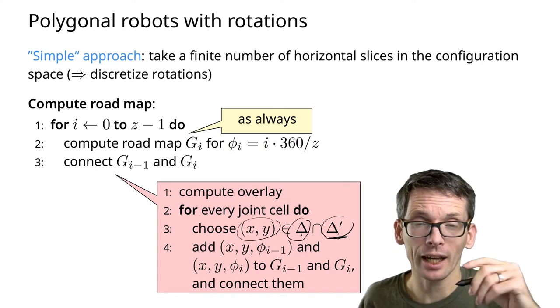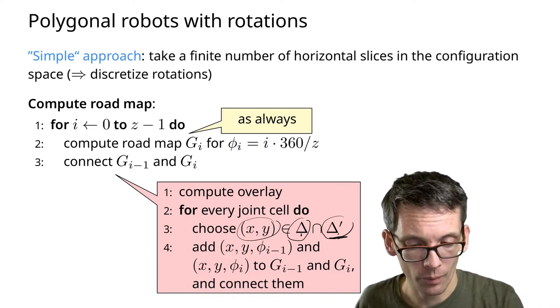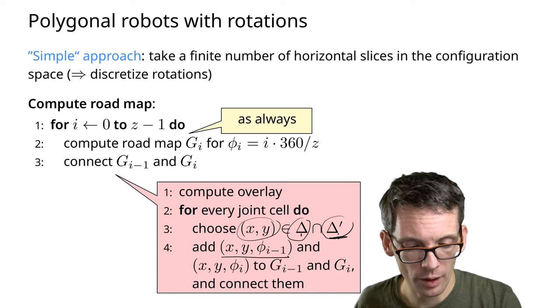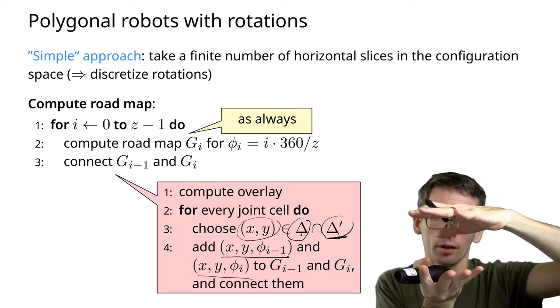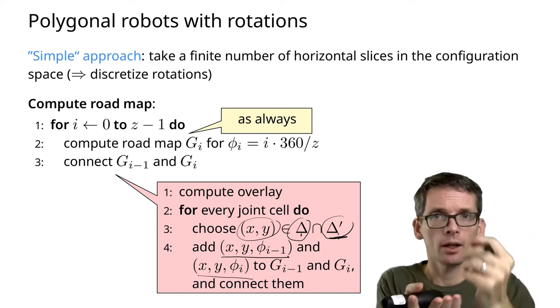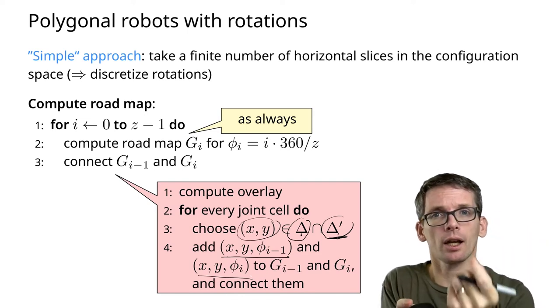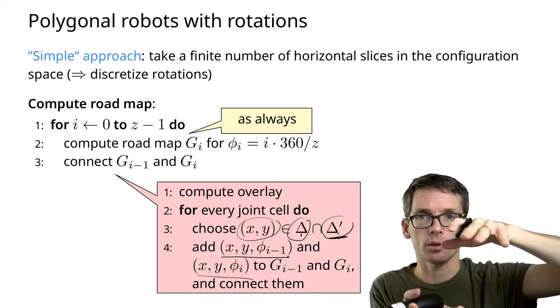For everything that is in the intersection, I'm going to add an edge from one slice to the next slice. Between two slices in the intersection of two cells, for those two cells I have an edge so I can move up to the next slice.